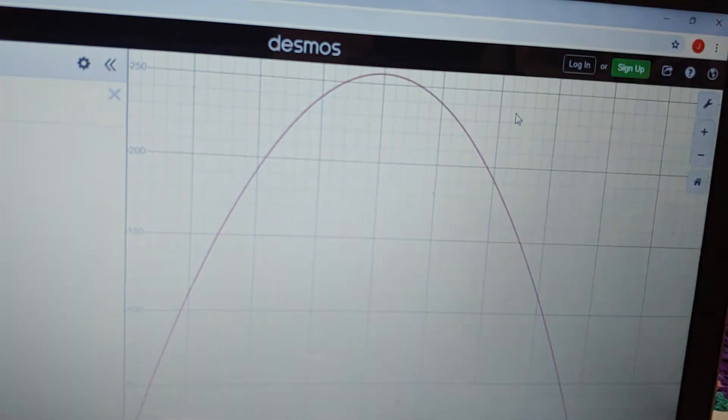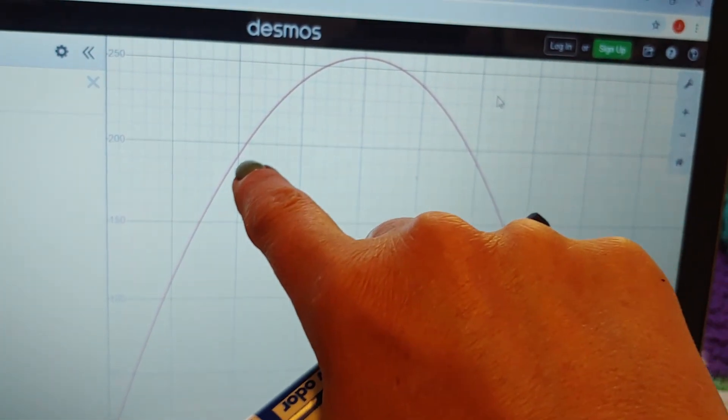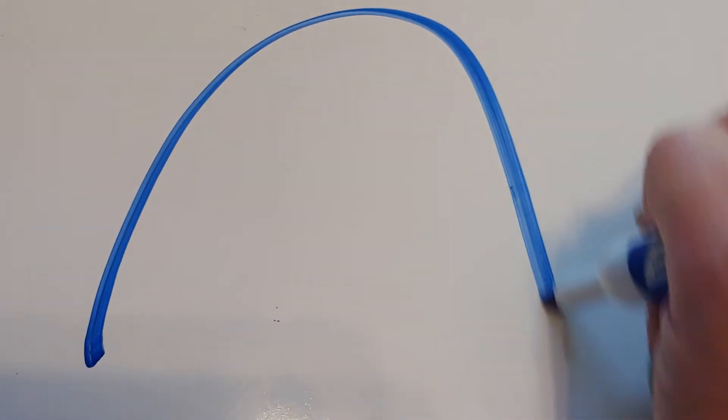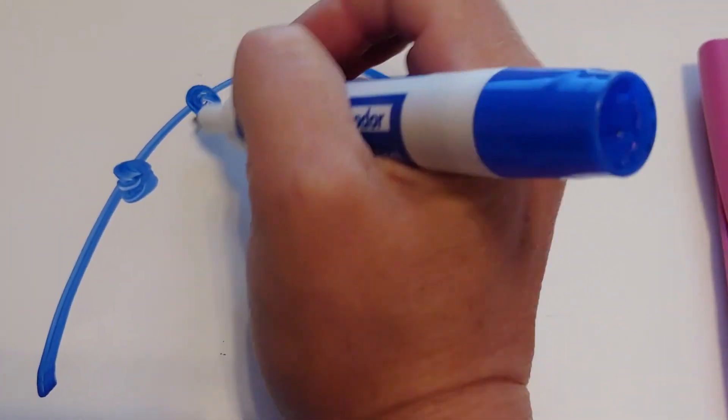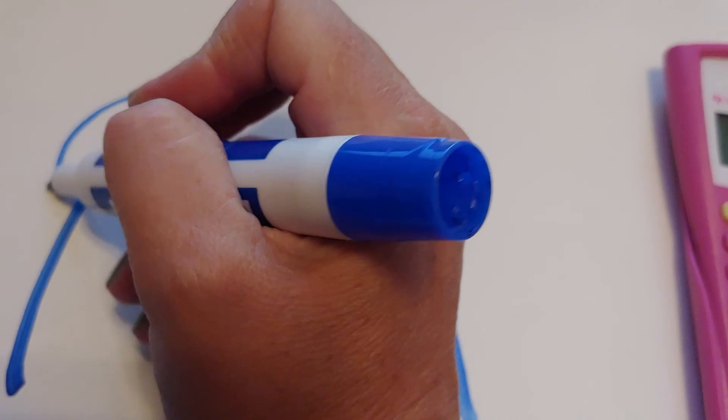Sorry, my computer just fell asleep. That line from 2 to 2.5 mimics the curve pretty well. So what I'm saying is that here is our curve. Over here is 2, over here is 2.5. When I draw that line segment, it's going to be pretty similar to the curve.